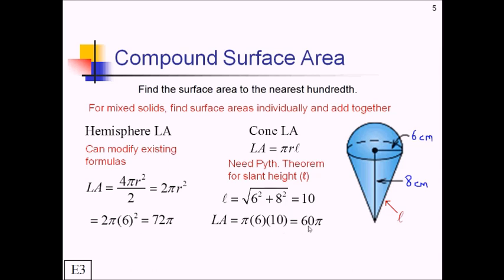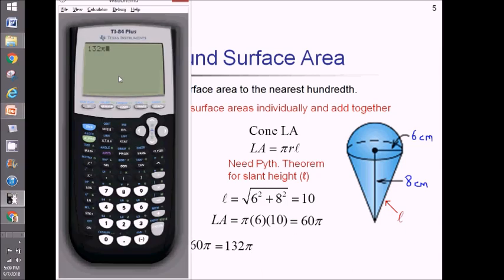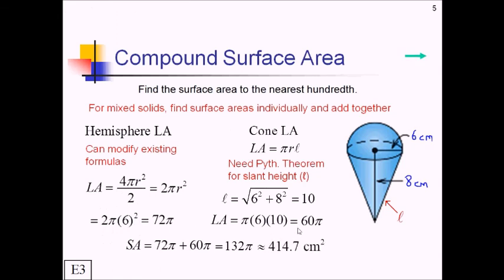But wait, there's more. We have to actually add these two areas together. So that's 72π and 60π. And you can actually add these together just like adding like terms. So that is 132π. And because that's not really satisfying, let's multiply 132 by pi to get a real answer here. On the calculator, 132π is going to come out to 414.7, and this will be centimeters squared.